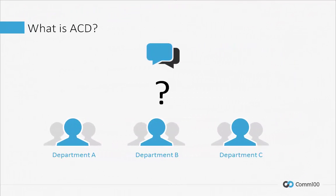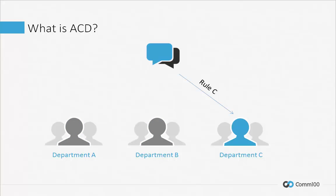If your enterprise uses phone support on a large scale, then you already know the primary benefits of ACD. In a nutshell, COM100 Live Chat ACD is a systematic distribution of chat requests amongst agents in your enterprise across a selected department or departments, based on rules and criteria that you're able to define yourself. Think of COM100 Live Chat ACD as a way of determining automatically who receives chat requests and when.